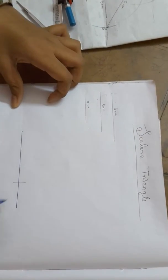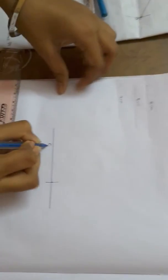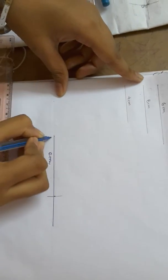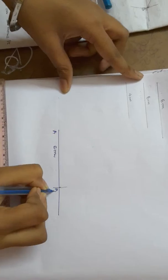From this point to this point is six centimeters. I name it A and B. Now you need to take the five centimeter measurement.